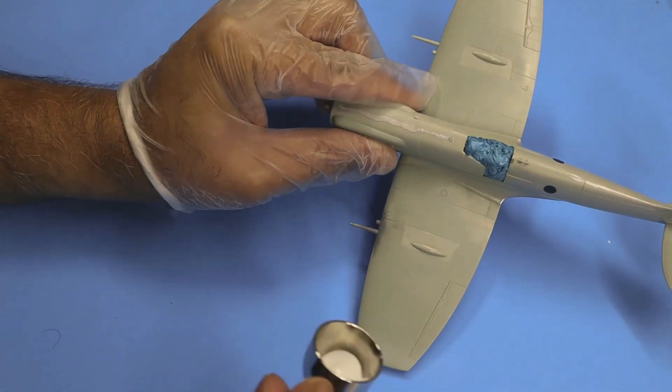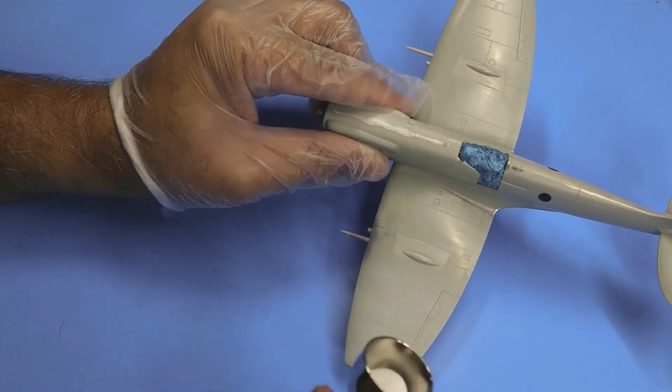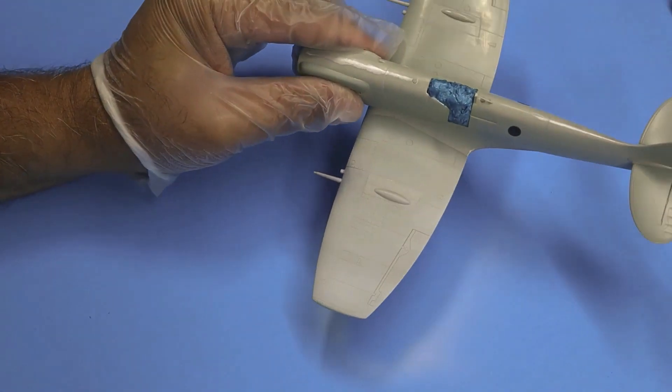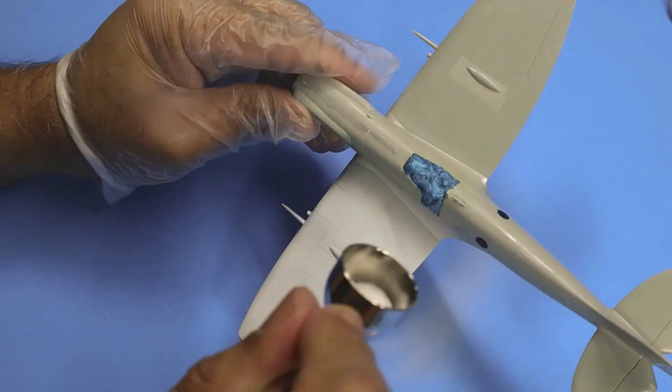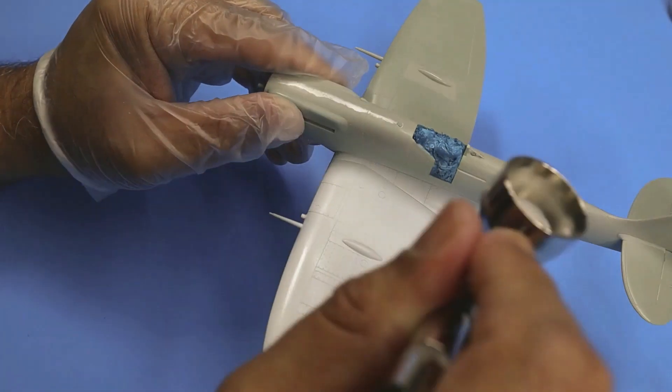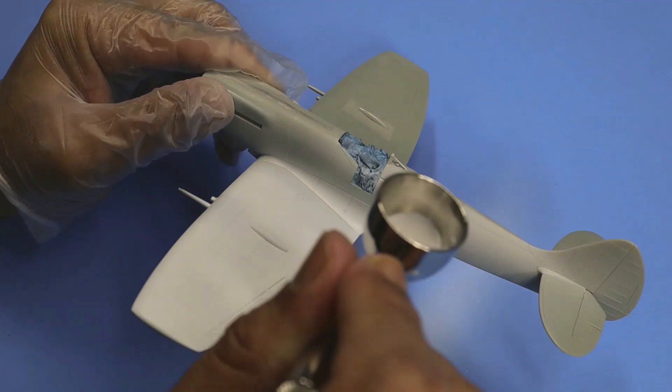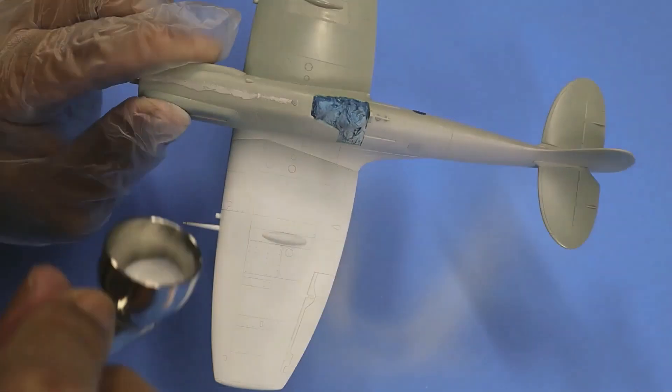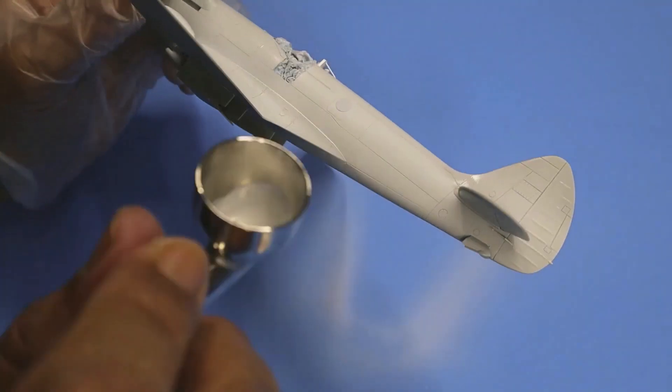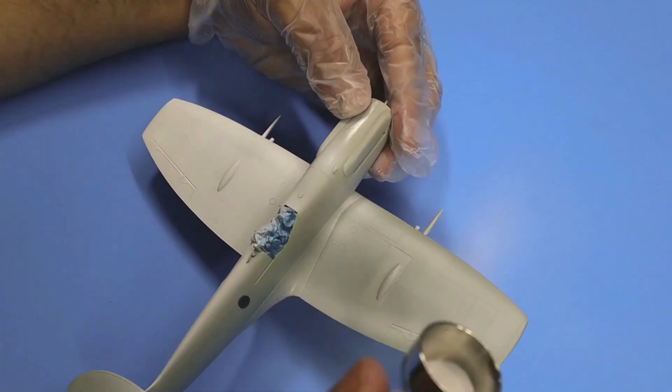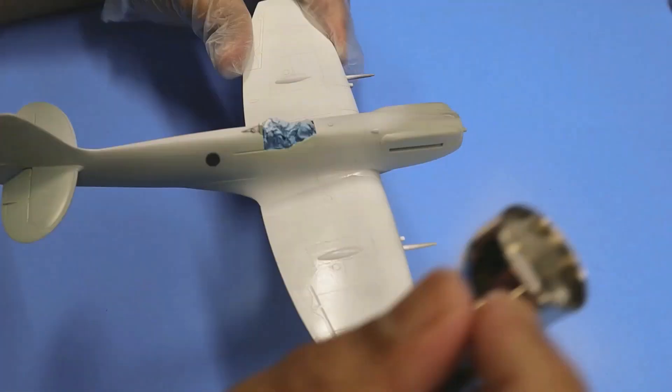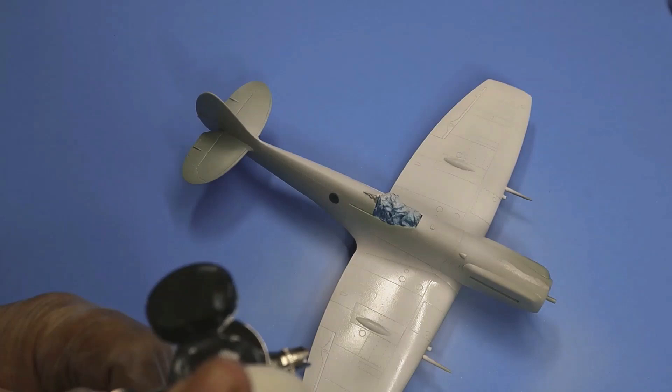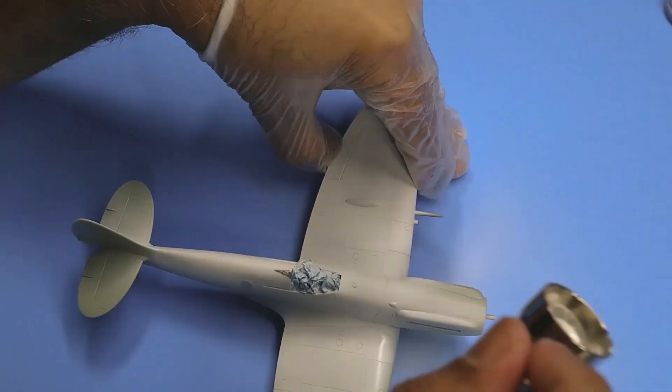I've already washed this model and used isopropyl alcohol to wipe it down. You really want to do that with natural metal finish because everything will come through—even the slightest fingerprint mark, hair, whatever it is will come through with the natural metal finish. So always good to wipe down your model and wash your model as well. As you can see, I'm building up the white primer here. I'm using my Badger Patriot 105 with a 0.5 millimeter needle at 30 PSI for this primer.